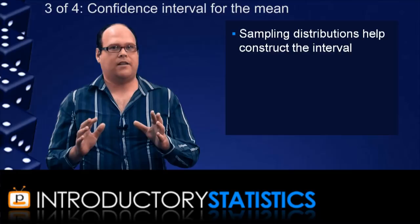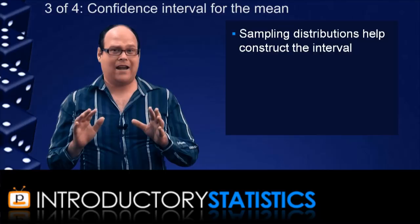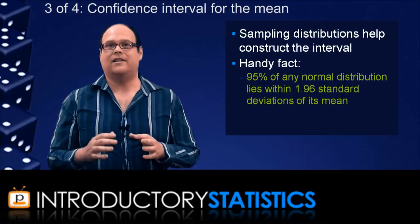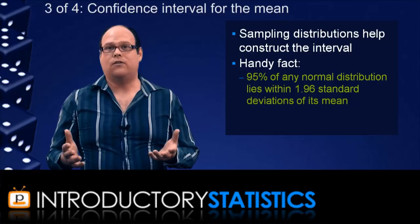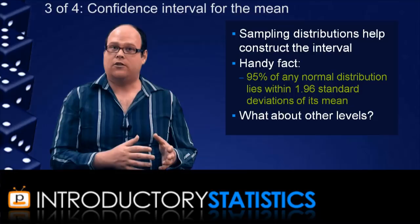But to get back to the TV example, we were just seeing how the sampling distribution helped us construct the confidence interval. But you might have noticed at one stage we used the rather handy fact that 95% of any normal distribution lies within 1.96 standard deviations of its mean. This is a pretty common fact about normal distributions, but what do we do if we want to use some other level of confidence? Well, to address that, we have to relate the sampling distribution to the standard normal distribution z.